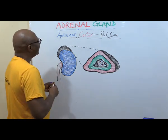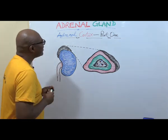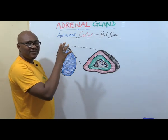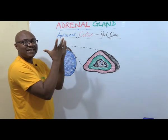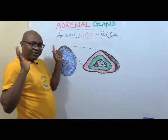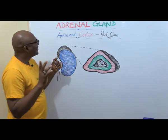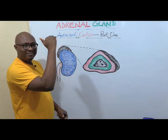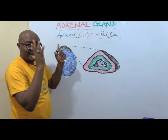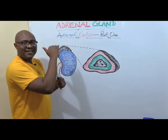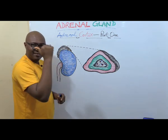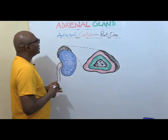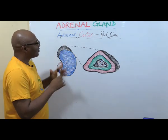Now let's get started. Today we're going to be dealing with the final classical endocrine gland. We've covered five of them: the pituitary gland, which is the master gland; the thyroid gland; parathyroid; endocrine pancreas. Now the adrenal gland.